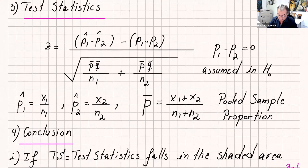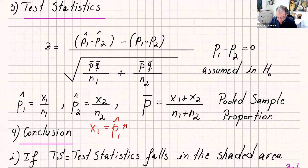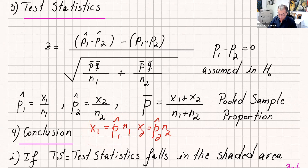Now, p-hat-1 is x1 over n1 and p-hat-2 is x2 over n2. One important note: if p-hat-1 and p-hat-2 are given directly, calculate x1 — which is p-hat-1 times n1 — and x2 — which is p-hat-2 times n2 — because when you use your calculator you are going to need x1 and x2. Some problems give it to you directly; some go straight to p-hat-1 and p-hat-2. Make sure to calculate those right away.